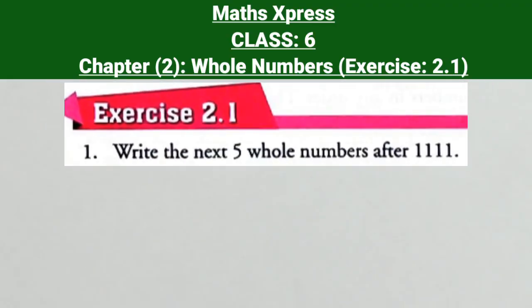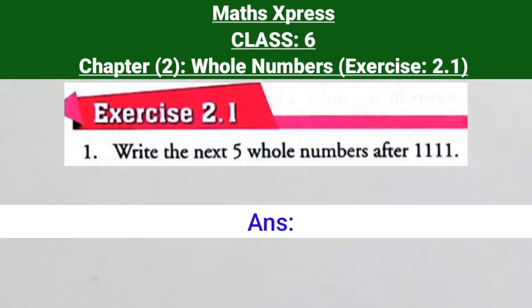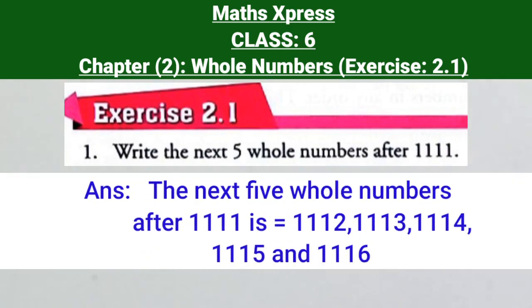Question 1: Write the next 5 whole numbers after 1111. Therefore, the 5 whole numbers after 1111 are 1112, 1113, 1114, 1115, and 1116.